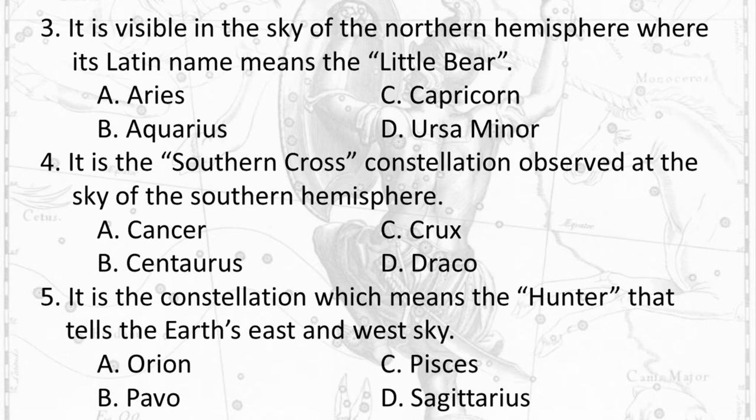Question 4: It is the southern cross constellation observed in the sky of the southern hemisphere. A. Cancer B. Centaurus C. Crux D. Draco.